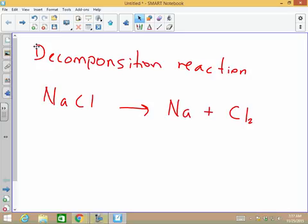Okay, let's balance it out. Na on the left has a 1. It has 1 Na here, 1 Na there. 1 Chlorine, 2 Chlorine. So, the first thing that's not balanced is Chlorine.